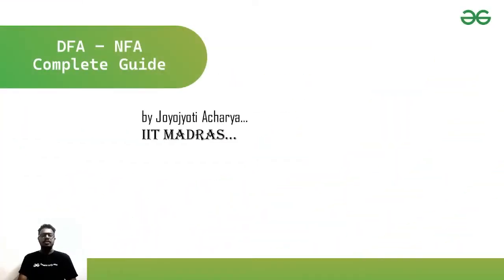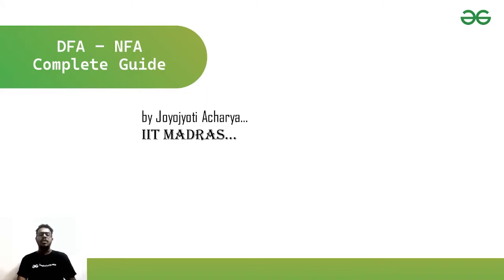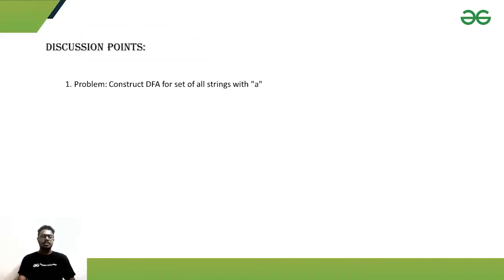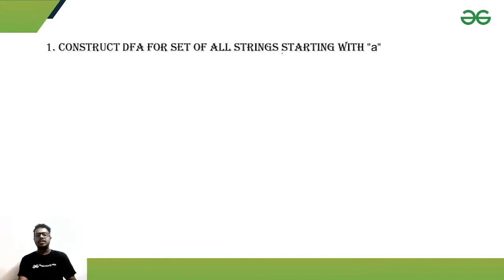Hello everyone, welcome to GeeksForGeeks. Today in the playlist of DFA/NFA complete guide, we will be discussing the specific problem where we will be constructing a DFA which will either contain a single symbol, start with a single symbol, or end with a single symbol. Our topic is: construct a DFA for the set of all strings with 'a', where the string is starting with 'a'.